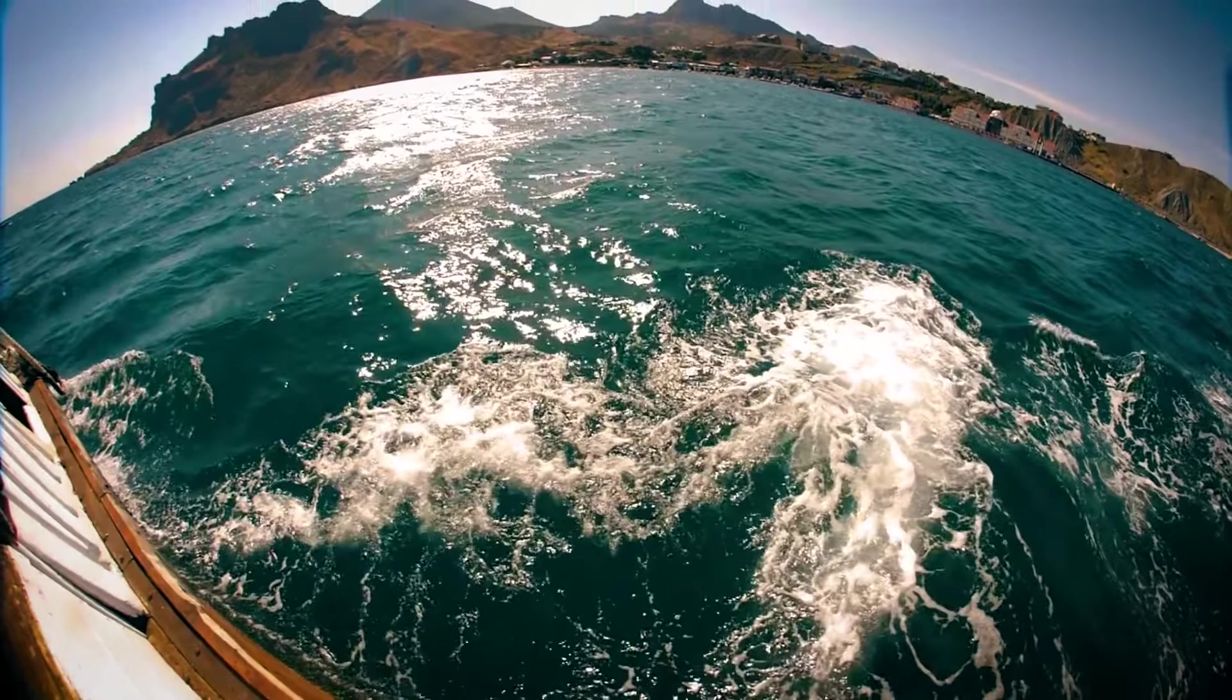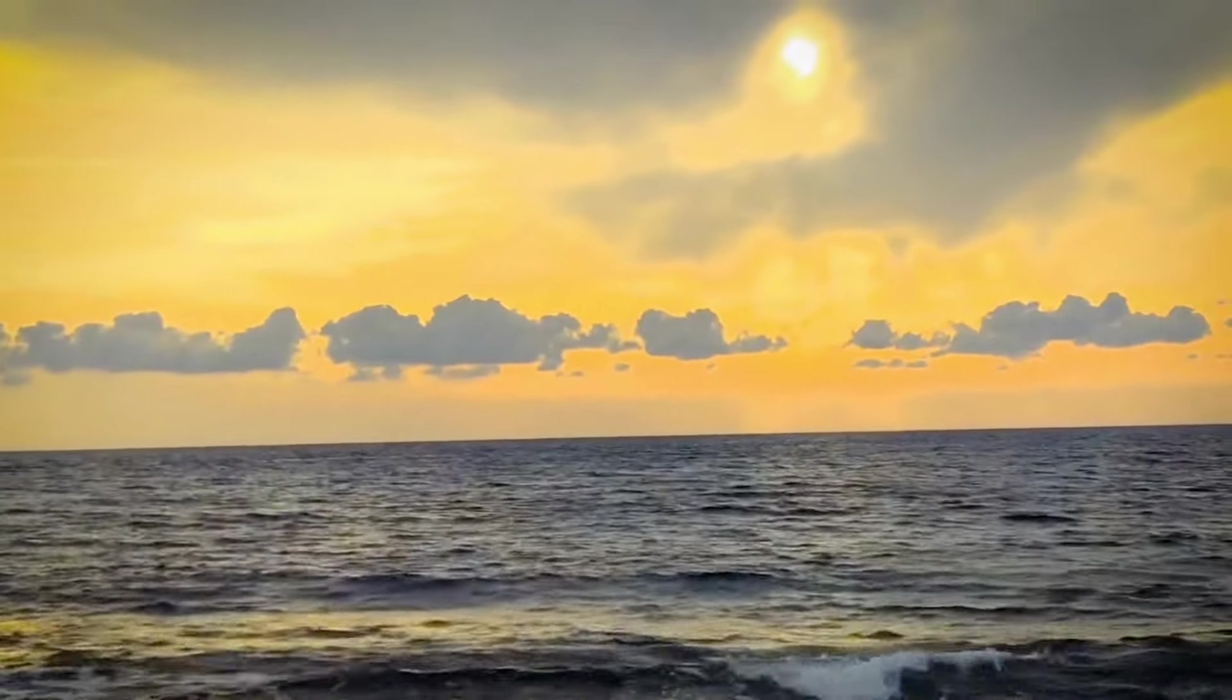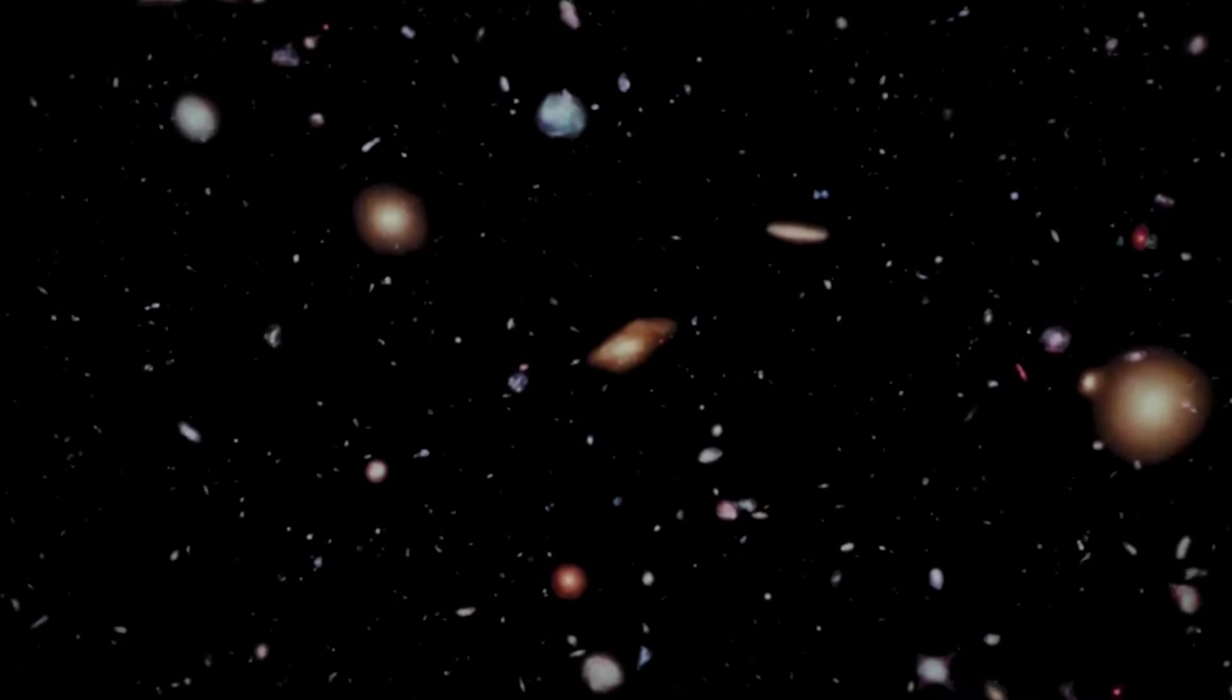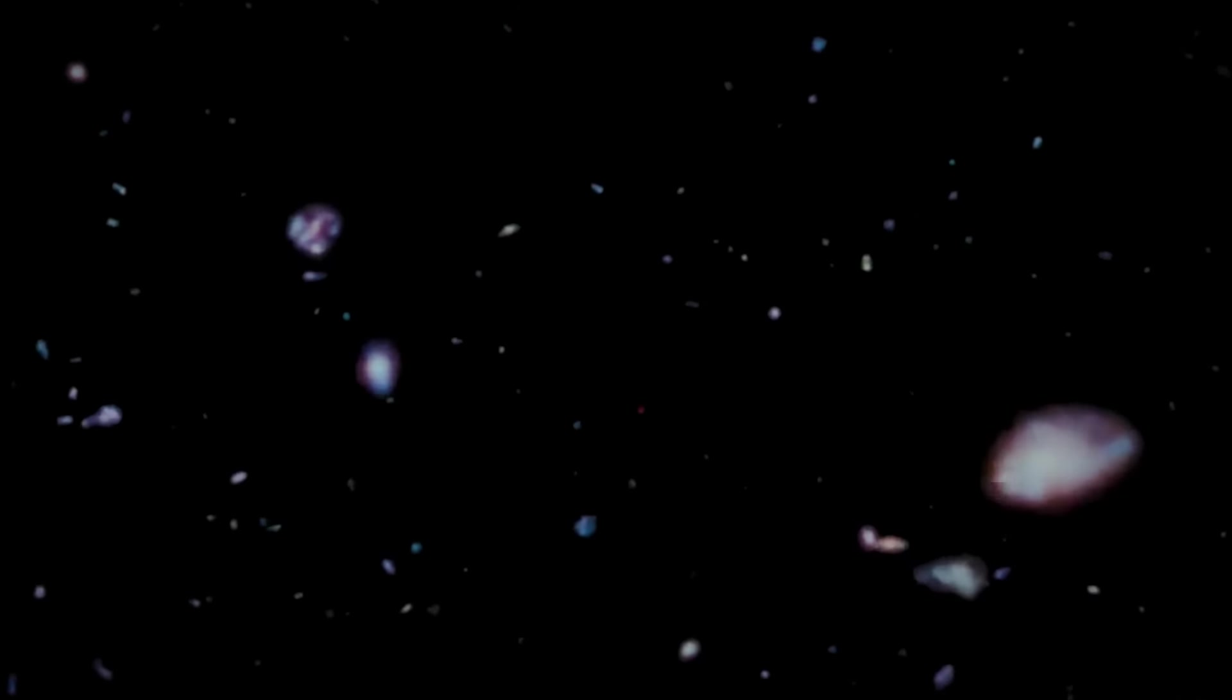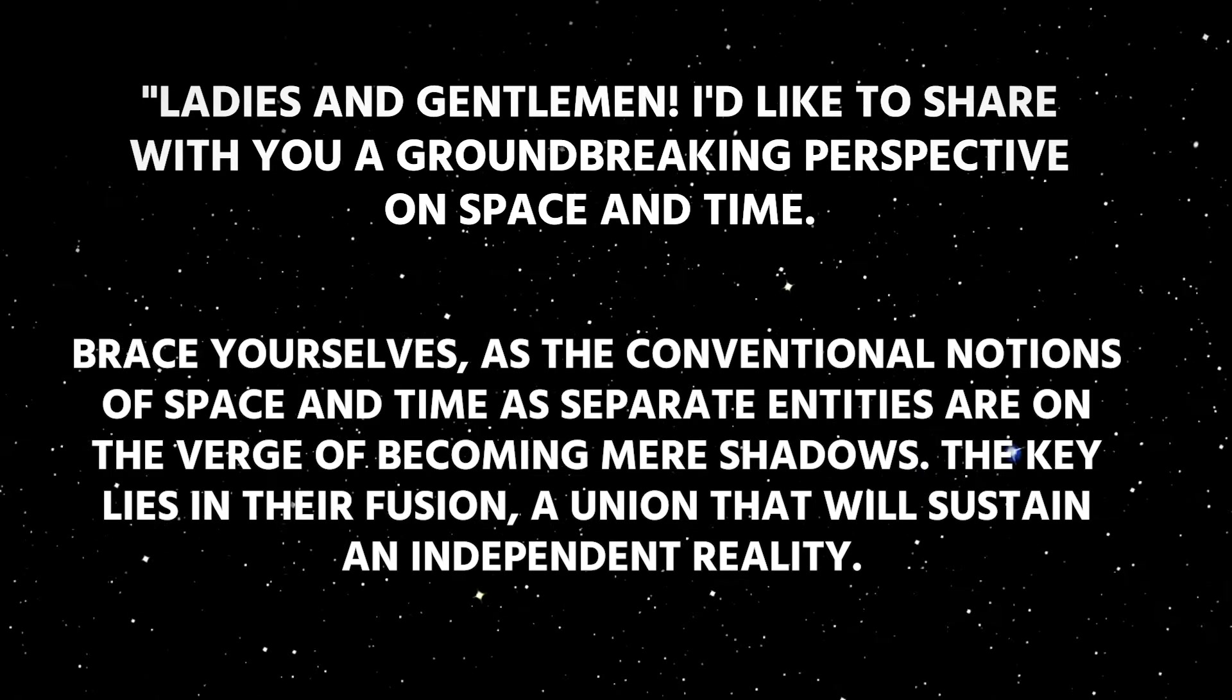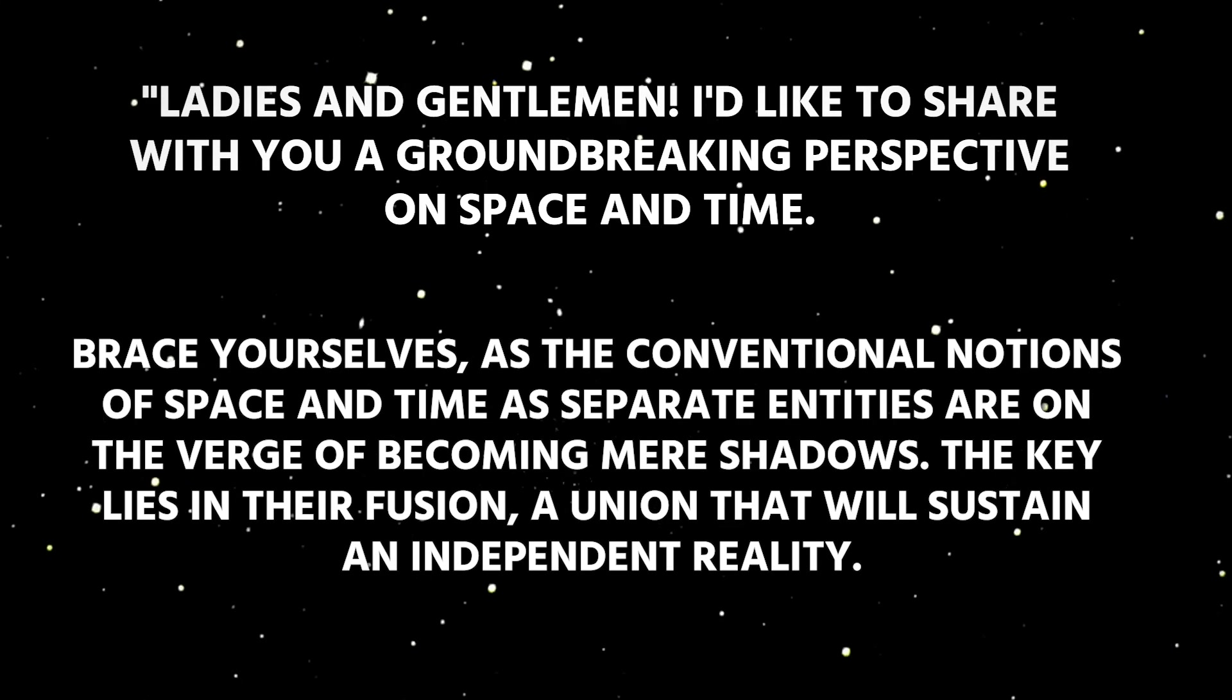Yet if this were true, something else had to give. The only variables left were the very nature of space and time. For the theory to hold, each observer needed their own measurement of space and time. Special relativity dictated that the speed of light was absolute, not space and time. No longer were space and time the universal stage on which physics unfolded. Just as Maxwell had unified electricity and magnetism, the stage was set for space-time to become the next unified concept. Ladies and gentlemen, I'd like to share with you a groundbreaking perspective on space and time. Brace yourselves, as the conventional notions of space and time as separate entities are on the verge of becoming mere shadows. The key lies in their fusion, a union that will sustain an independent reality.